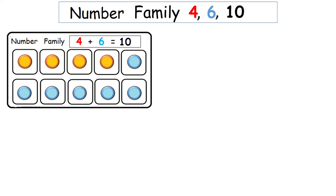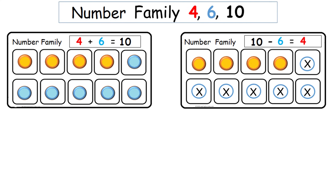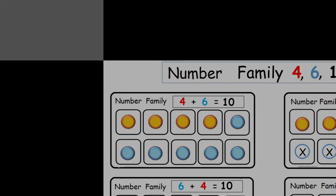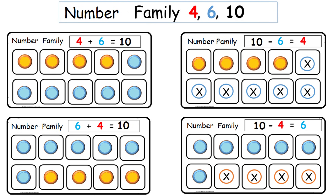We've looked at 2 ways that 4, 6, and 10 fit together. Now let's look at 2 more. 6 blue circles plus 4 orange circles equals 10. And 10 minus 4 orange circles equals 6 circles.